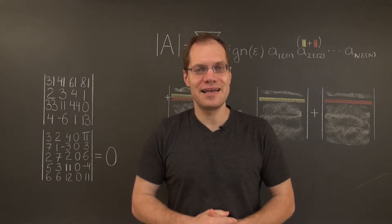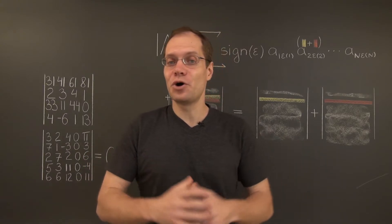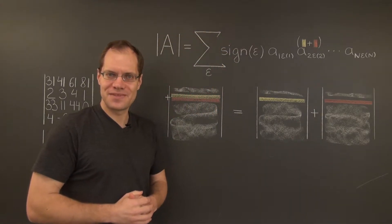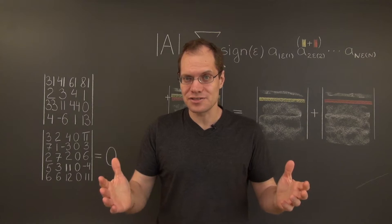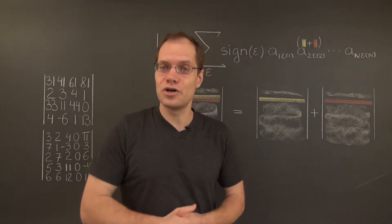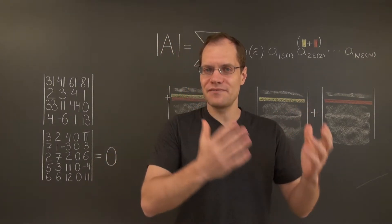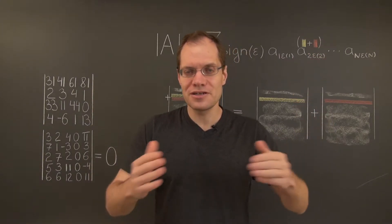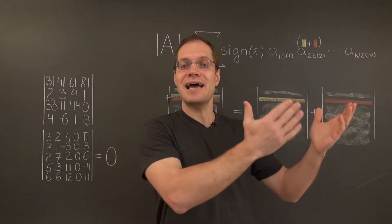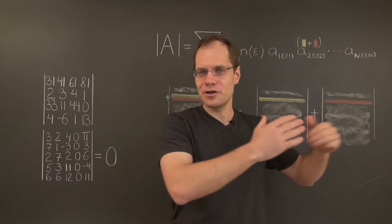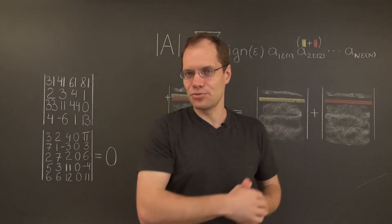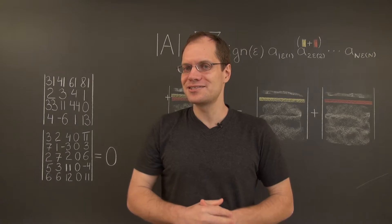The second part of linearity is even more straightforward. I don't even have a graphic for it. It states that when in a matrix, you think of a particular row as a number times a vector, then the determinant of that matrix equals that number times the determinant of the matrix with that vector at that row, and the remaining rows are the same.